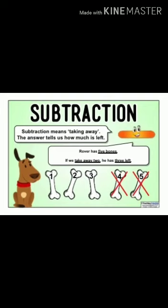Let us see an example. Rover is a dog. It has five bones. Two bones fell into a pond.